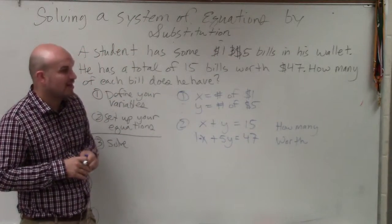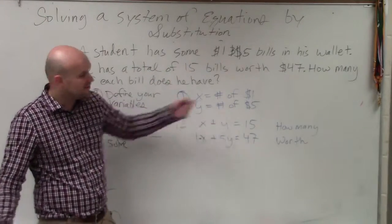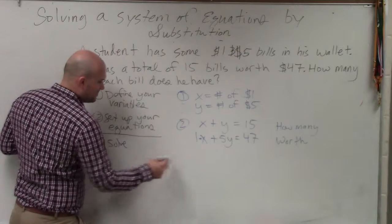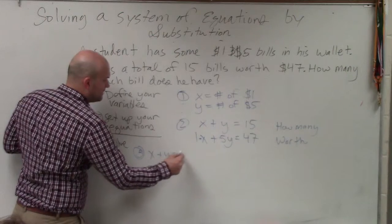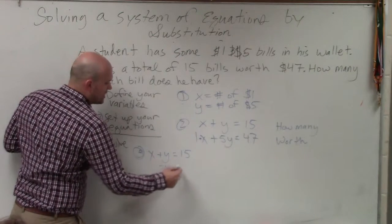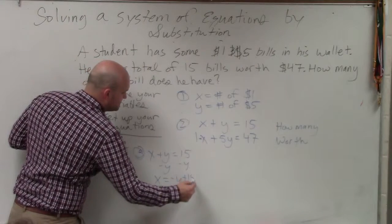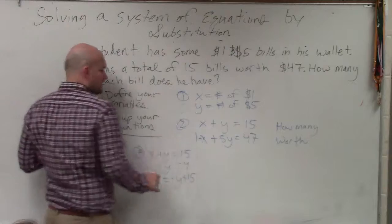So again, we need to pick a variable we want to isolate. I'll isolate the x. If you isolated the y, you'll get the exact same answer. So step number three is going to be x plus y equals 15. I'll subtract y, subtract y, x equals negative y plus 15. That is my quantity that I'm going to plug in for x in the other equation.